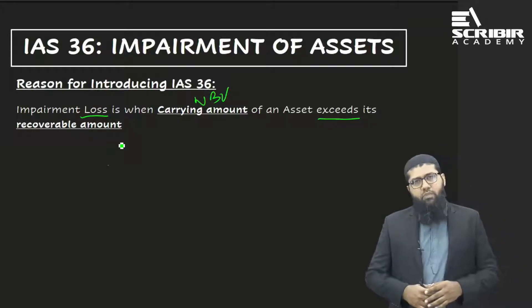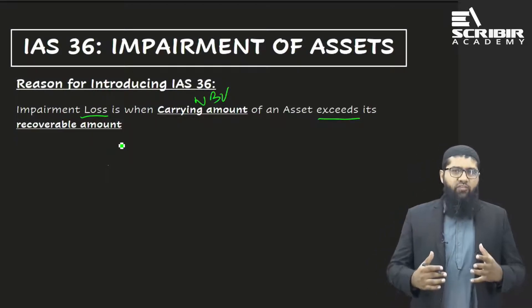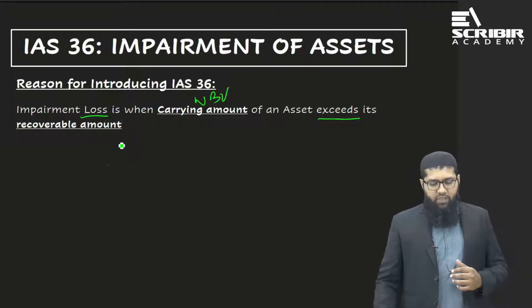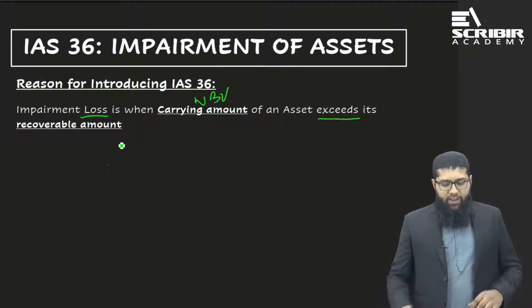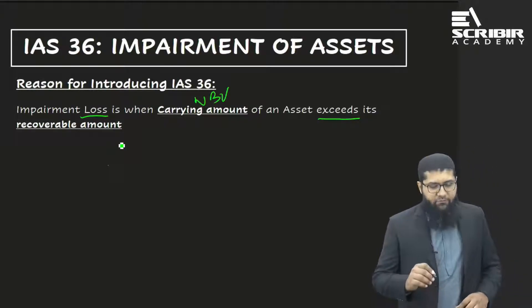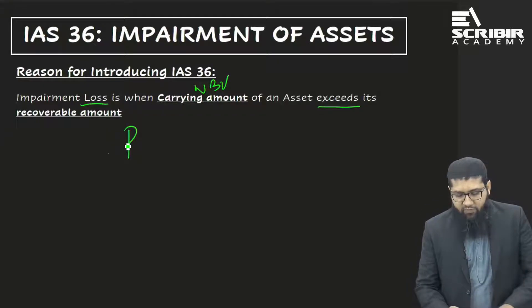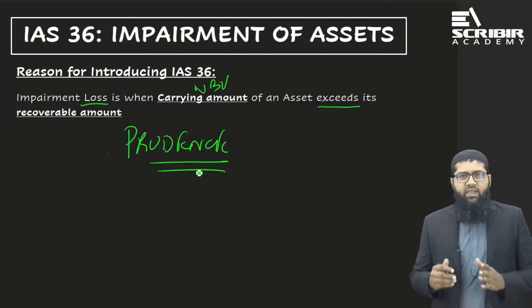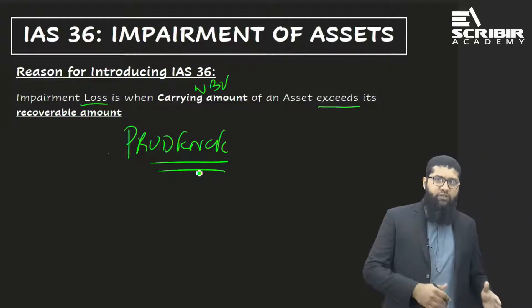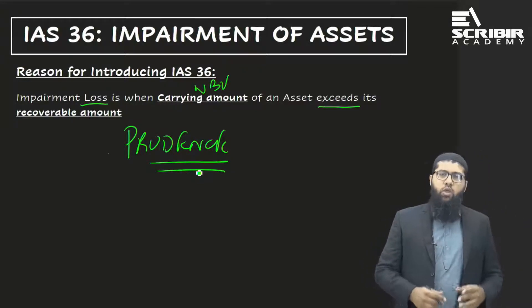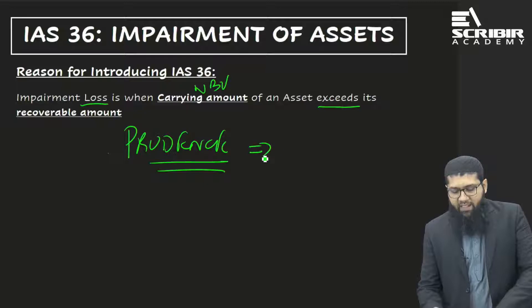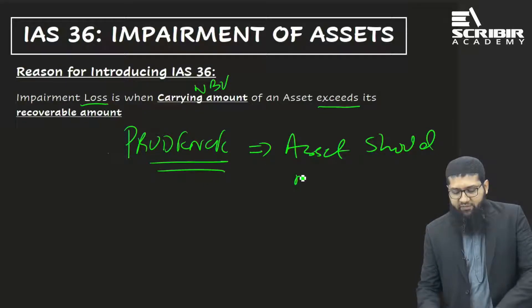What is the logic behind IAS 36? When we study accounting, the first basic concept we study is called the concept of prudence. Among the various things that the prudence concept tells us, one of them is that assets should not be overstated.